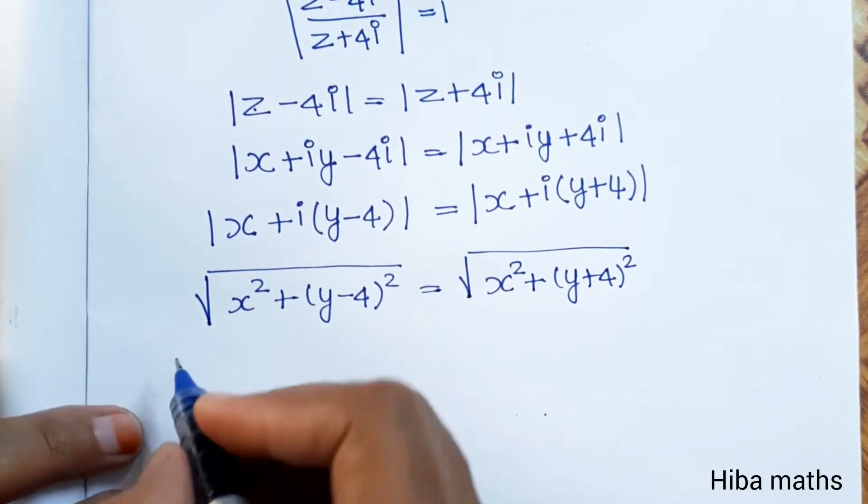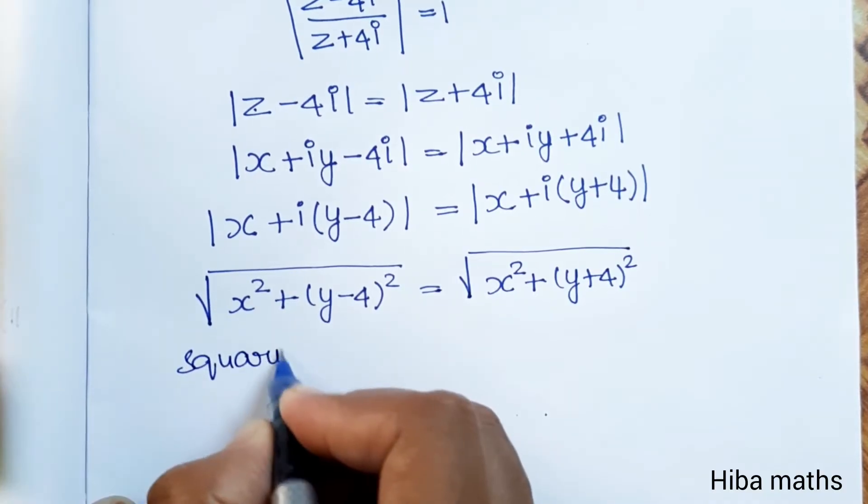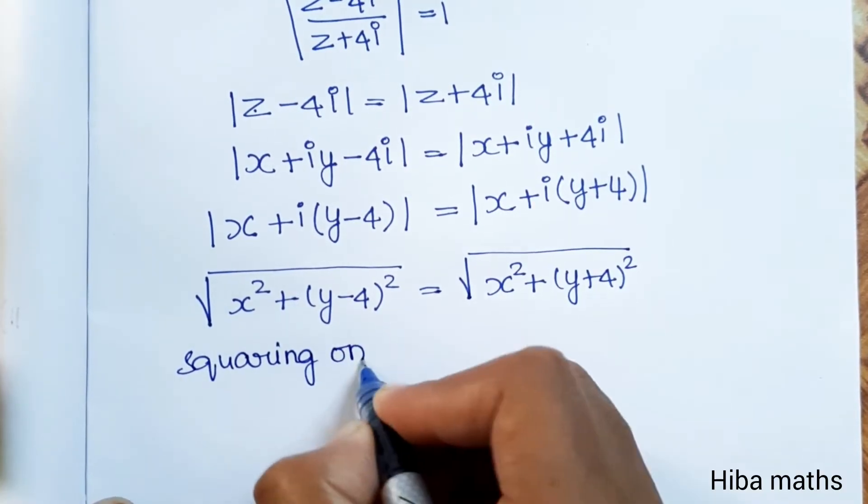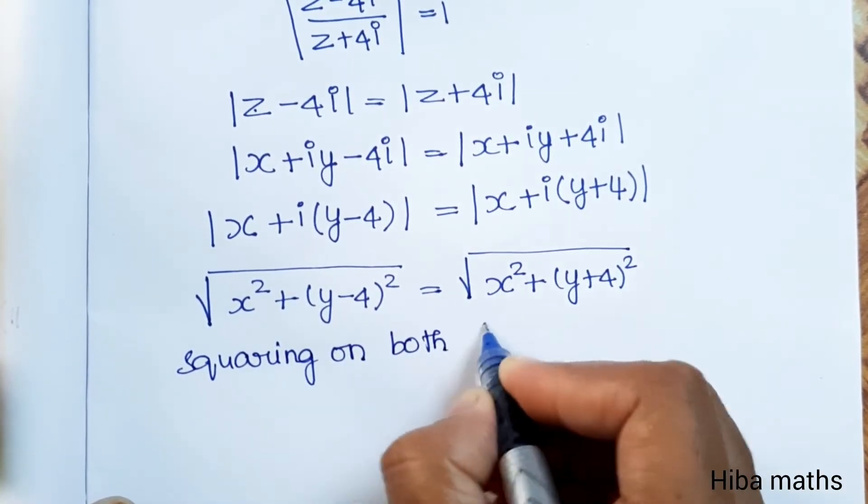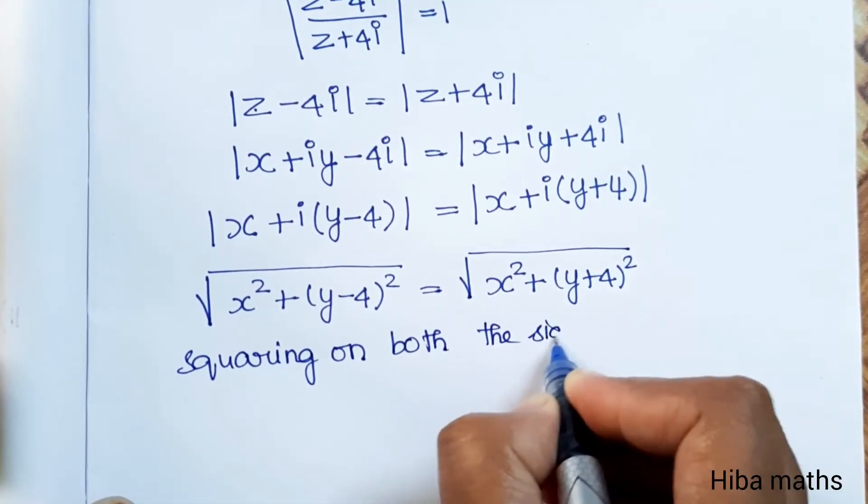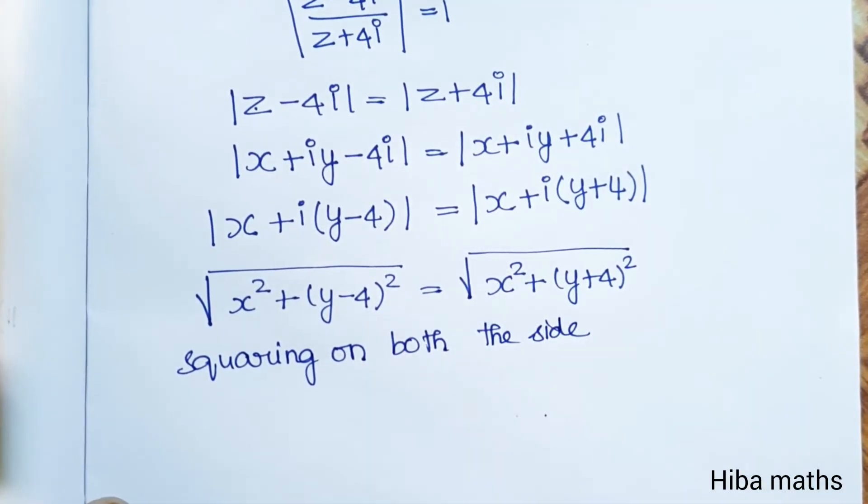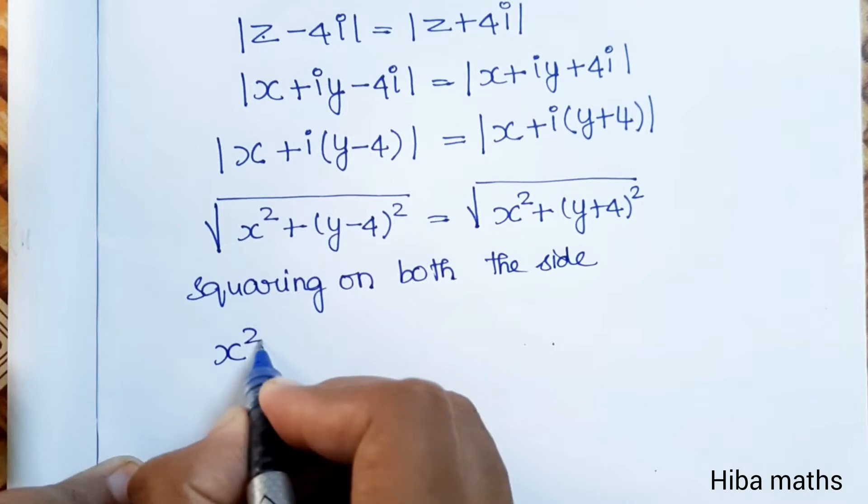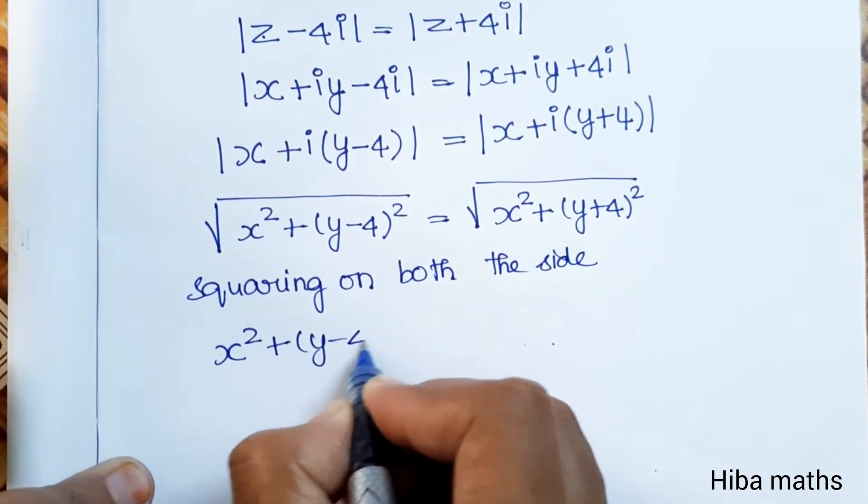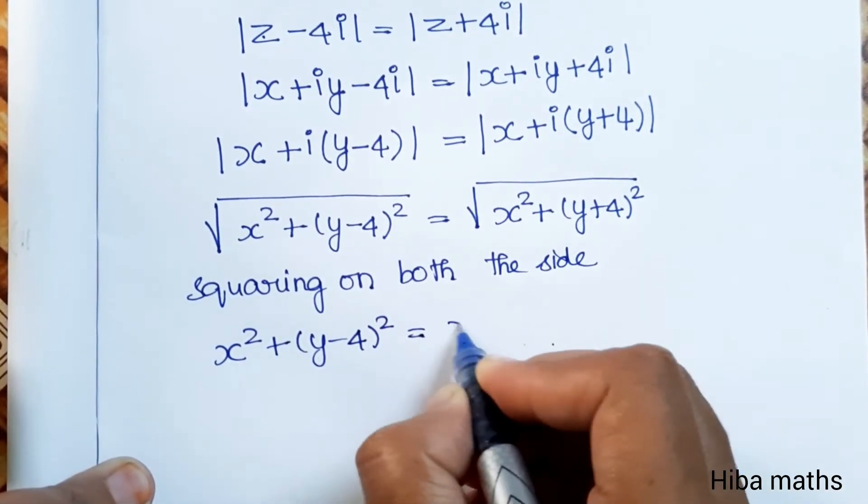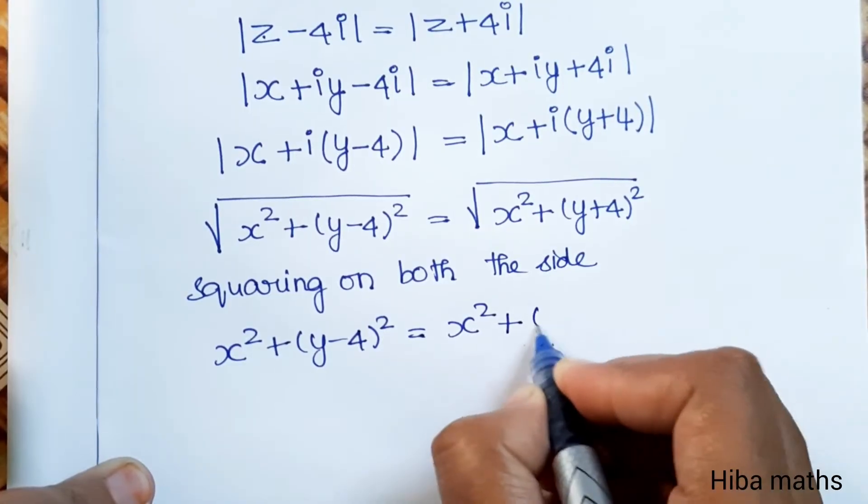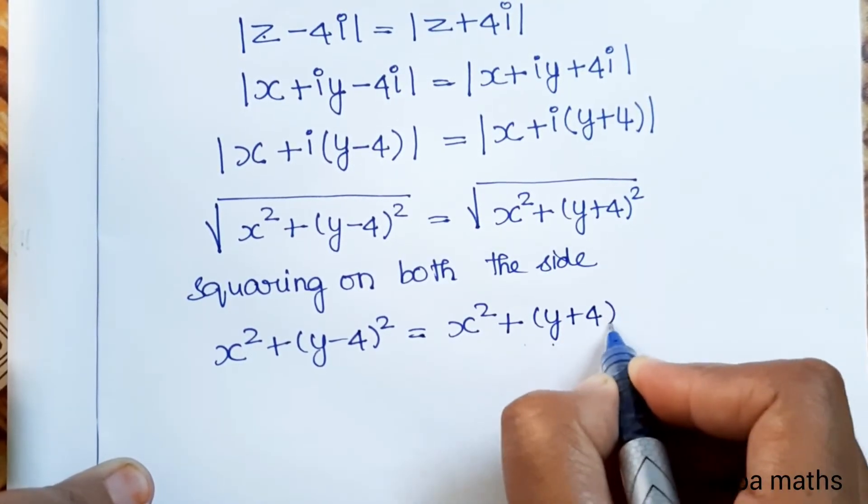Squaring on both sides. When we square, the roots cancel. We have x squared plus y minus 4 squared equals x squared plus y plus 4 squared.